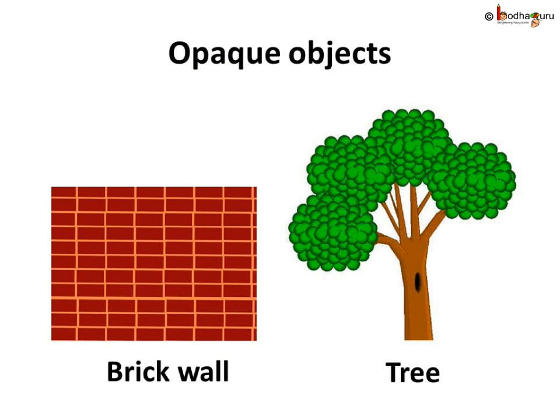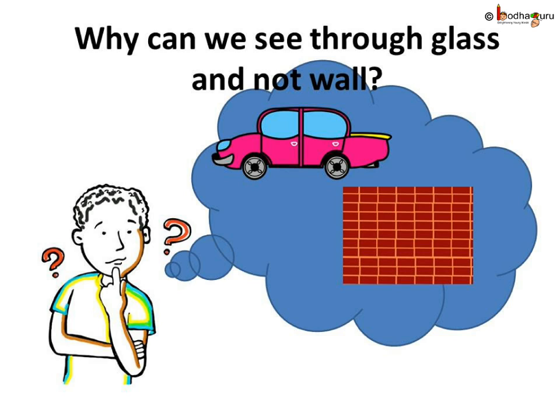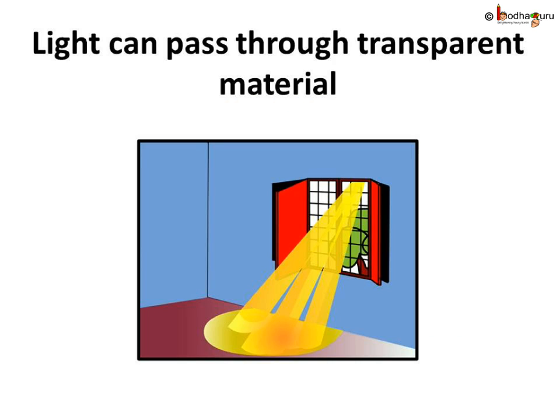Those substances or materials through which things cannot be seen at all are called opaque materials. Now you must be thinking, why is it so that we can see through a glass but not through a brick wall? Why can we see through transparent but not through opaque objects? We were initially talking about light, so you might also think, what has light to do with all these things? Well, light comes into picture when we talk about the transparency or opacity of things.